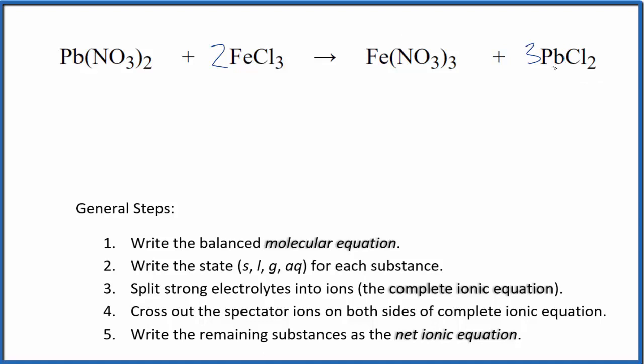Now the Cls are balanced. I have 3 lead atoms. Put a 3 here. Those are balanced. I have 3 times the 2 nitrates. So I'll put a 2 here. Balances the nitrates. We have 2 irons. This is the balanced equation. So balancing this molecular equation, if you can get this to be an even number, that's kind of helpful.